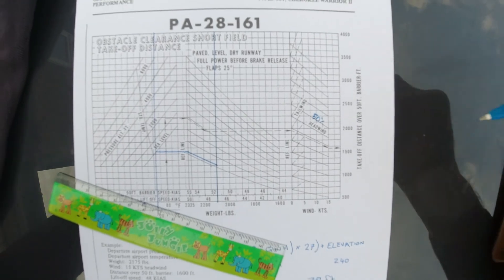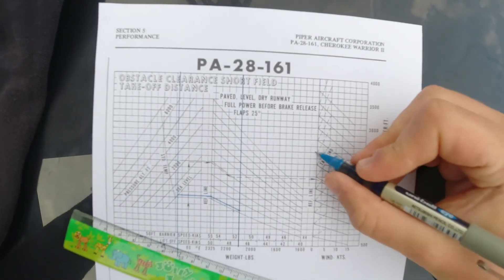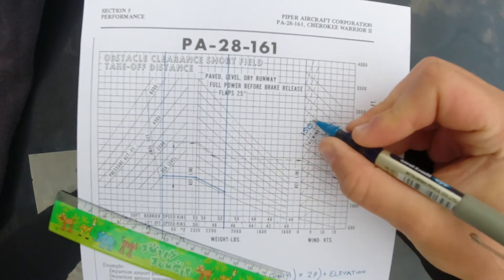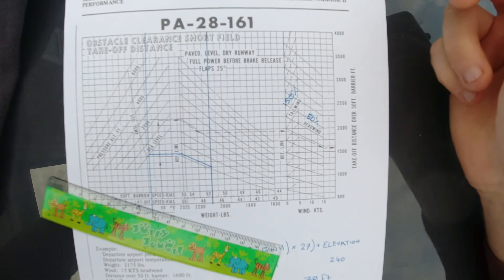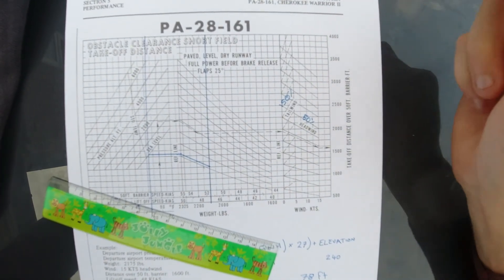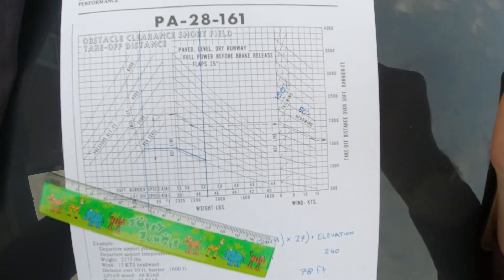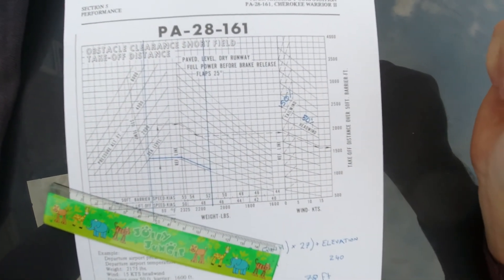Whereas for tailwind, the tailwind component always has to be considered in performance calculations, and you have to take 150% of the maximum possible tailwind component. So in our scenario there, if rather than a 10 knot headwind, it was a 10 knot tailwind, we'd have to account for 15 knots worth of tailwind. Best practice really is just to avoid a tailwind full stop.